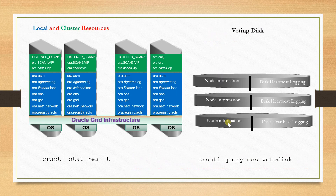I already covered in my previous session local registry and cluster registry. Local registry belongs to this particular node and cluster registry belongs to the entire cluster. Cluster registry resources can fail over to any other surviving node if this node goes down. For example, ScanListener, ScanVIP, and NodeVIP — if this node goes down, these resources will be passed over to any of the surviving nodes. But whatever the local resources are will not be available once this node goes down.